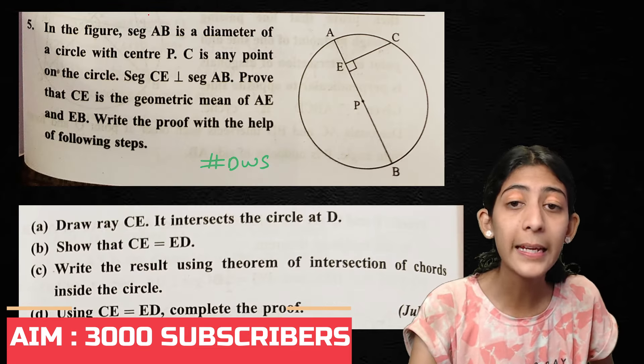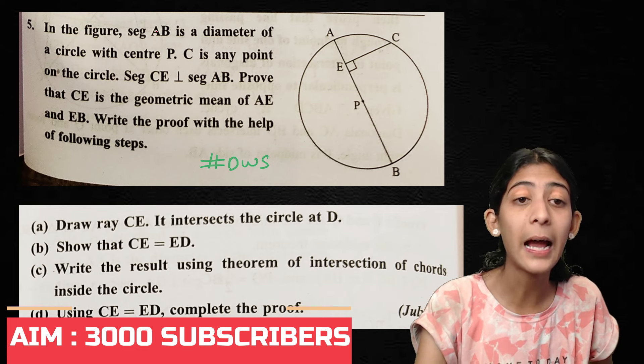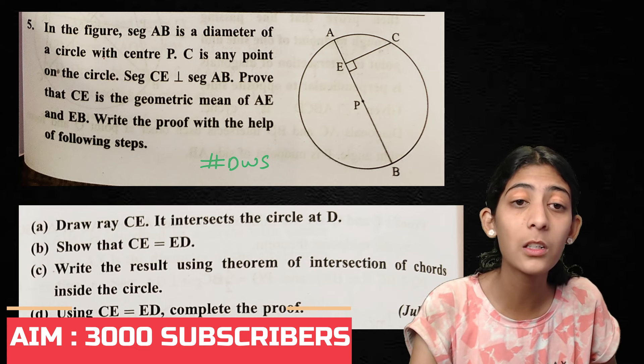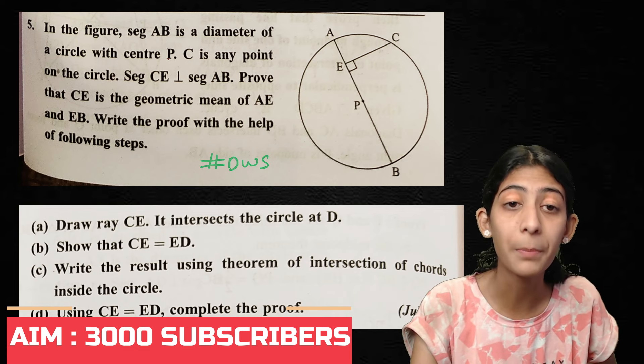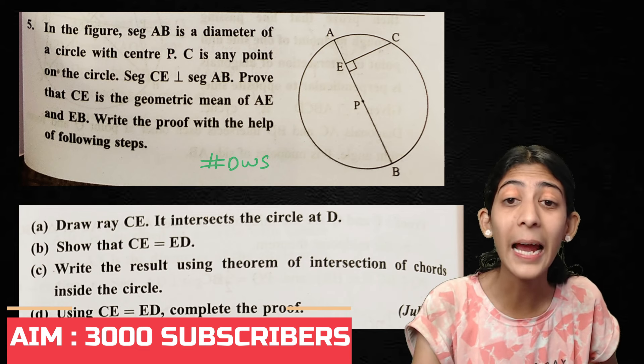Fifth question: In the figure, segment AB is the diameter of a circle with center P. C is any point on the circle.